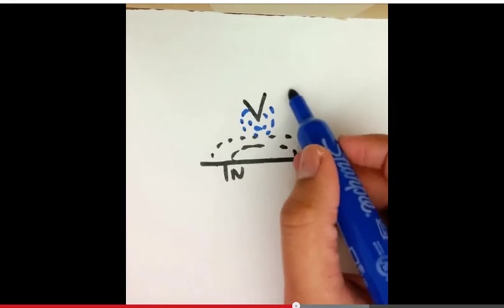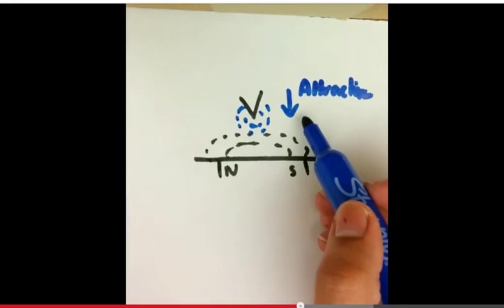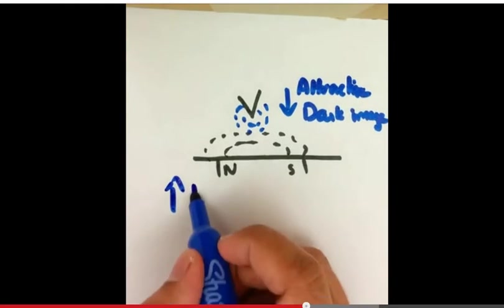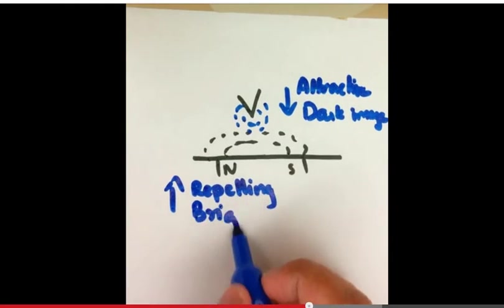In general, attractive interactions between the tip and the sample result in darker parts of images, and repulsive forces between the tip and the sample causes brighter images.